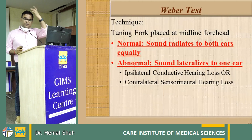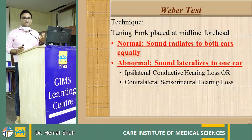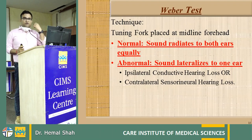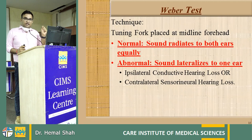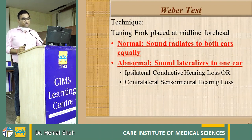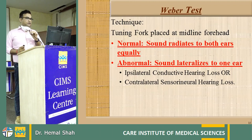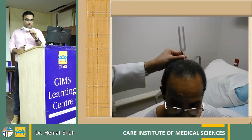Weber's test: you place the tuning fork in the center of the forehead, nasion, or glabella — it must be centered — to assess where the sound is lateralizing, whether to the right or left ear. Normally, sound radiates to both ears equally. Abnormally, it lateralizes to one ear. If a patient has right ear deafness with a perforation and the sound lateralizes to the same (right) ear, it is a conductive hearing loss. If the sound lateralizes to the opposite ear, it is sensorineural hearing loss.